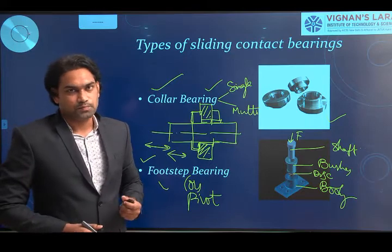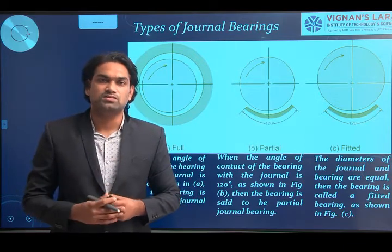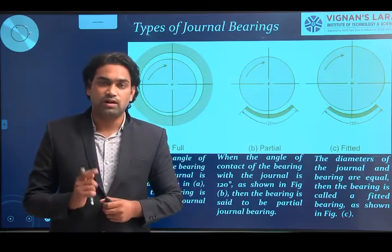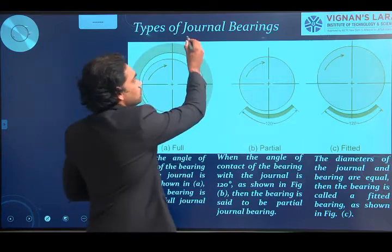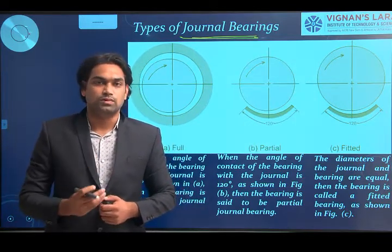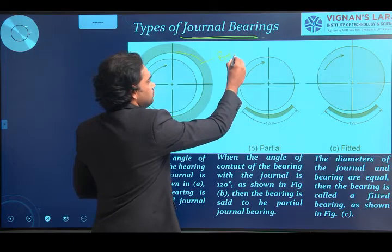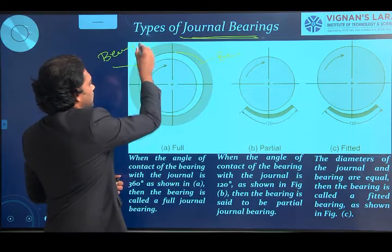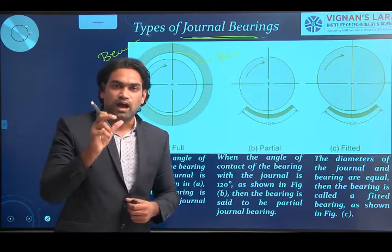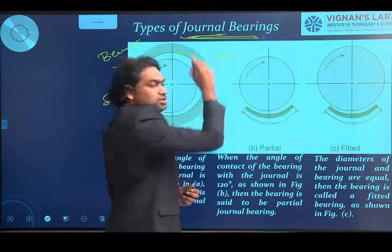We can also classify sliding contact bearings as plane bearings or sleeve bearings. If these sleeve bearings are subjected to radial loads (perpendicular to the axis of the shaft), those bearings are called journal bearings. We need to remember this word 'journal': the journal represents the shaft — specifically the portion of the shaft that lies on the sleeve. For example, the surface of the bearing portion and the shaft portion — whatever portion of the shaft is under the bearing assembly, upon the sleeve, is called the journal.